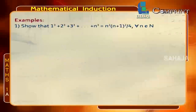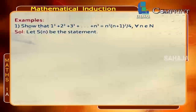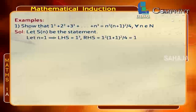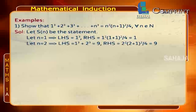Example 1: Show that 1³ + 2³ + 3³ + … + n³ = n²(n+1)²/4 for all n belonging to the natural numbers. Solution: Let S(n) be the statement. For n = 1, LHS = 1³ = 1 and RHS = 1²(1+1)²/4 = 1, so LHS = RHS, which is true.